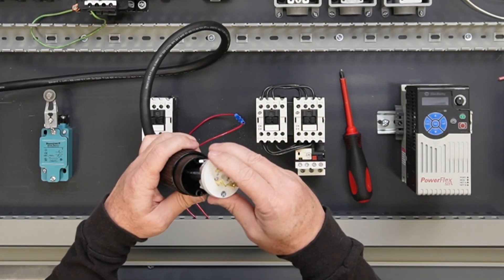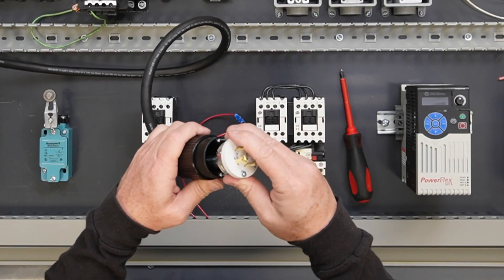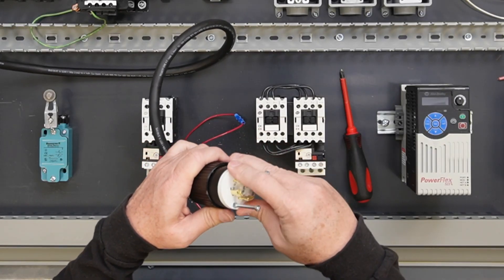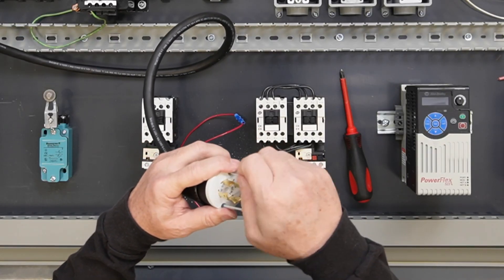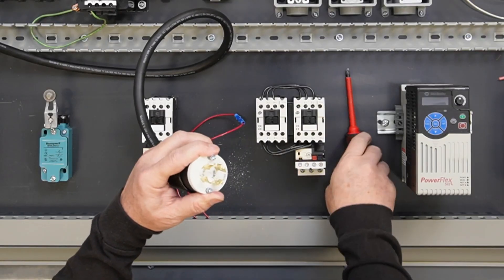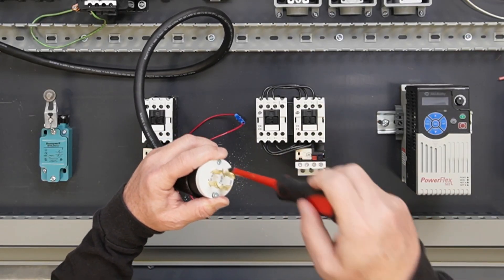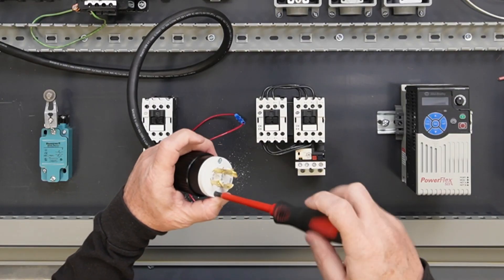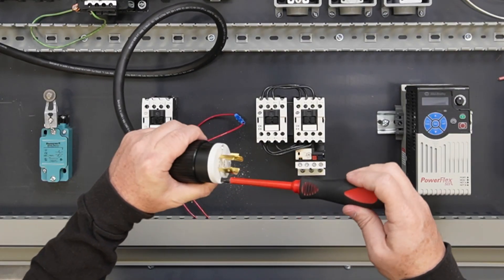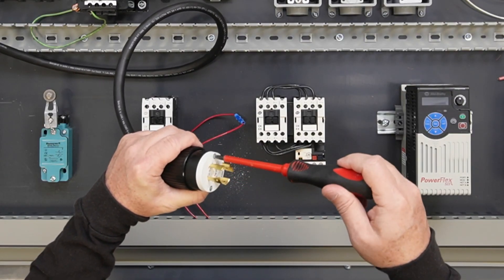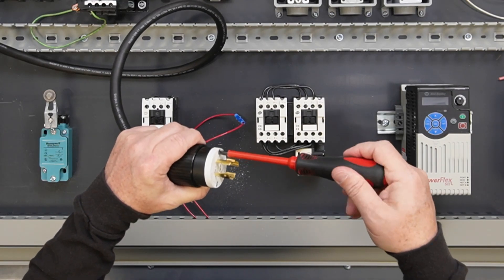Slide the cover up and over the plug terminals, aligning the assembly screws with the screw holes. Tighten the assembly screws to 10 inch-pounds, or approximately half as tight as the terminal screws, alternating between the two. Do not over-tighten as it can crack the cover.